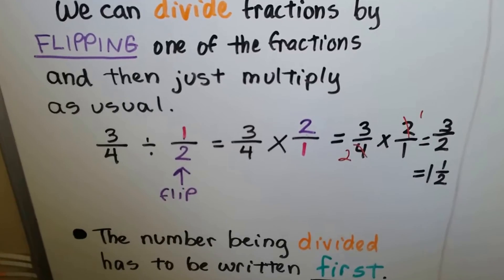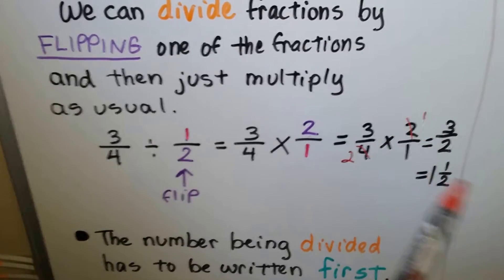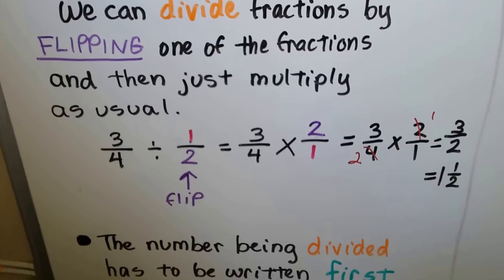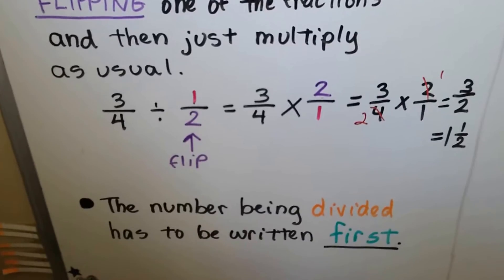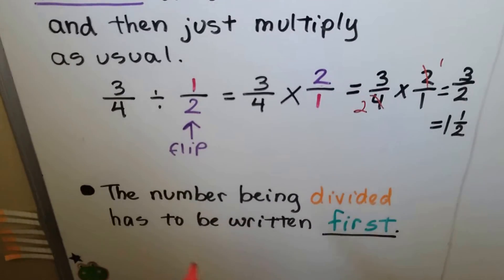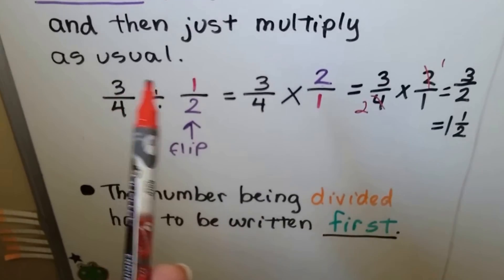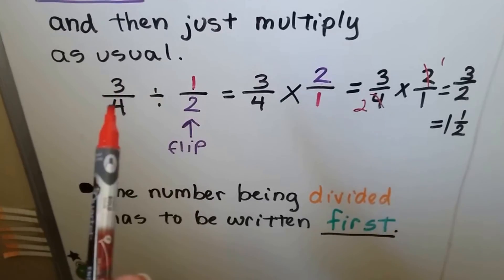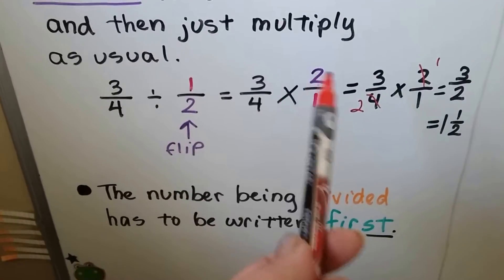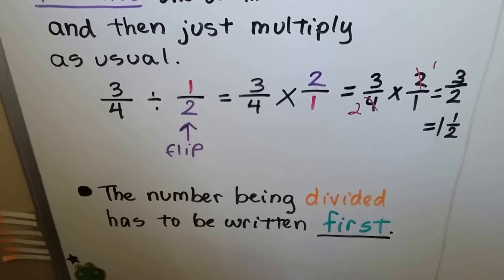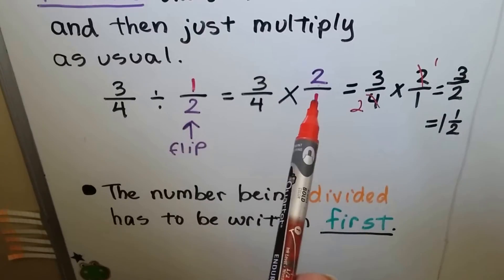If any part of this confused you, you got ahead of yourself and need to go back and watch the beginning of lesson 7. This is 7d — we've already done 7a, b, and c, and there are links in the description. The number being divided has to be written first — that's really important. The 3/4 is being cut in half, so the 3/4 has to be written first, then we flip the fraction and change it to multiplication.